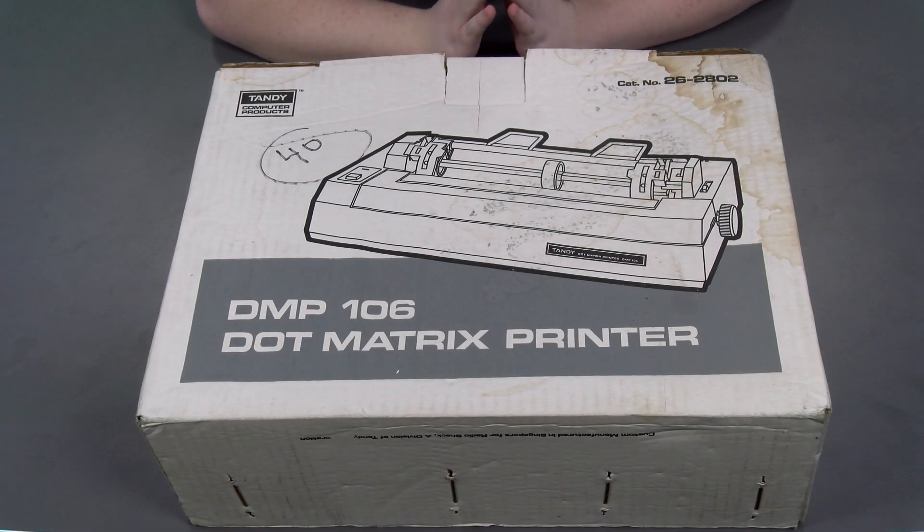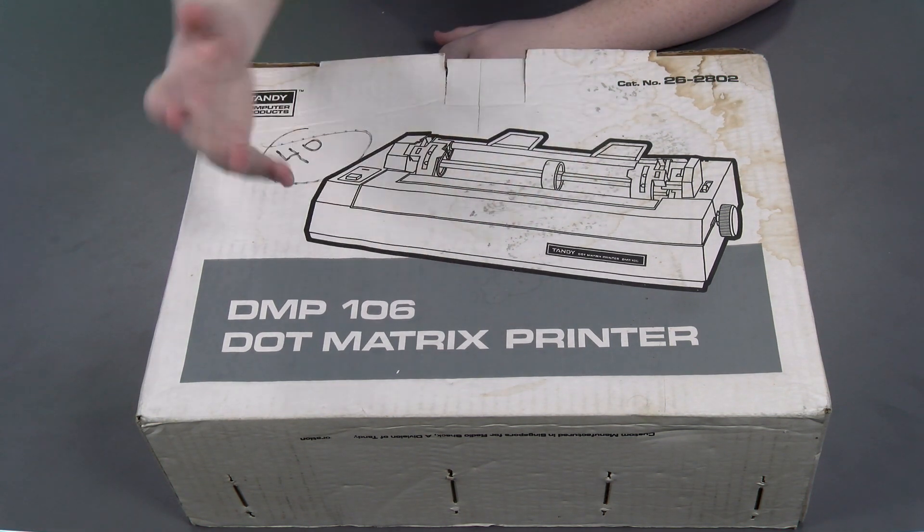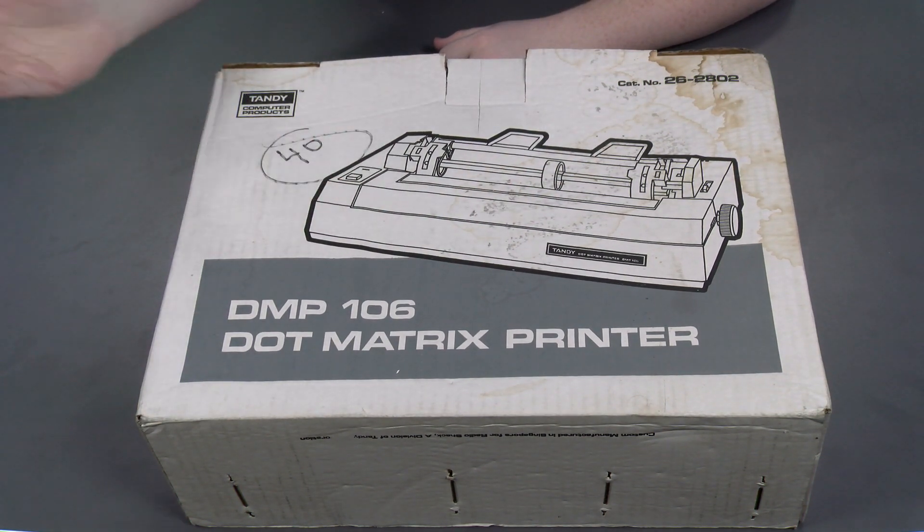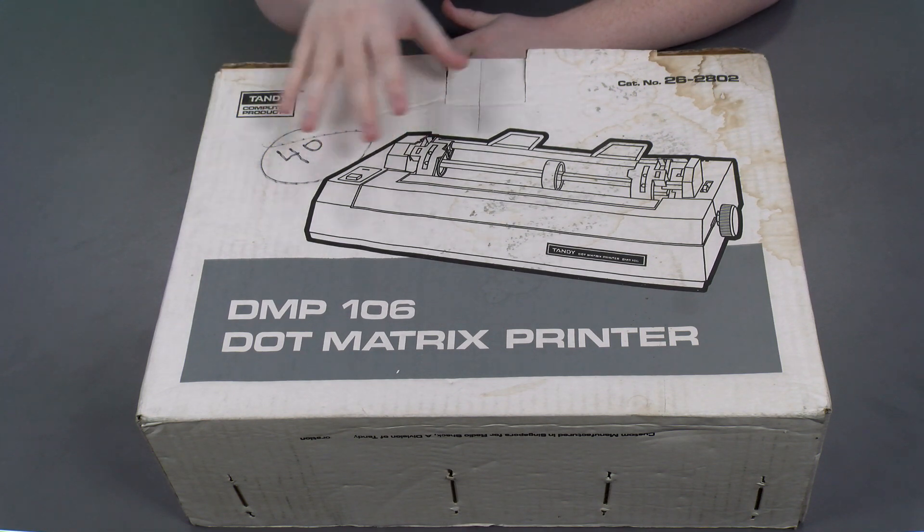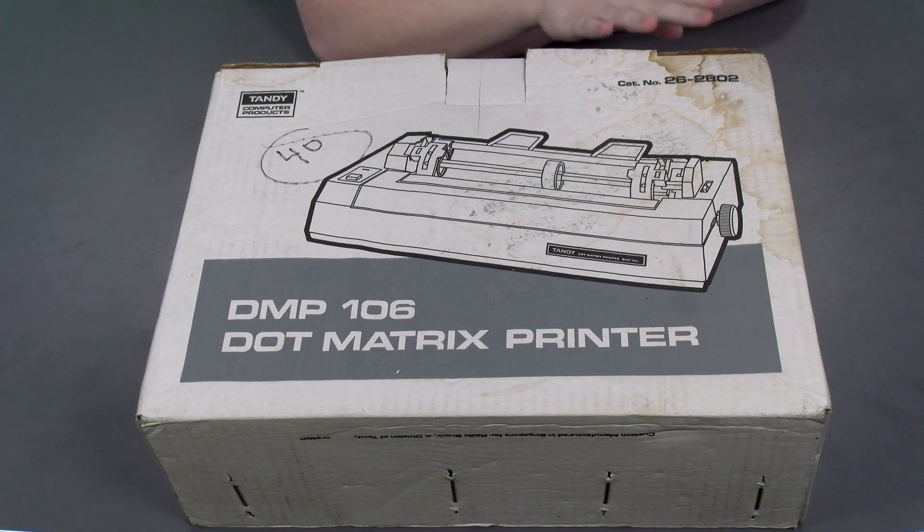Alright, so here's the box. The printer itself is printed on the box. It's a dot matrix printer. There's nothing particularly special, as far as I know, about this model. There's definitely some water damage and exposure to the box itself, hopefully the insides are fine.